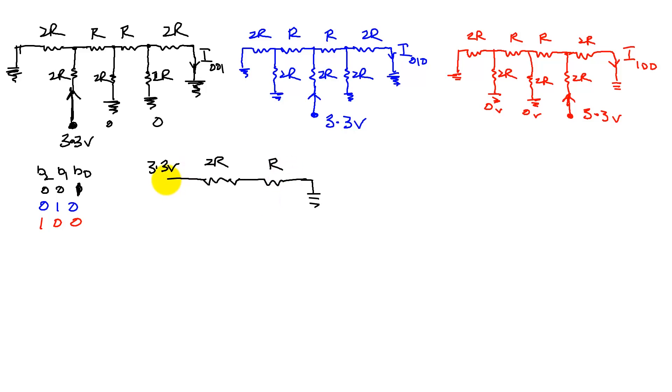That is, the net resistance from the powering signal to ground is going to be 3R.